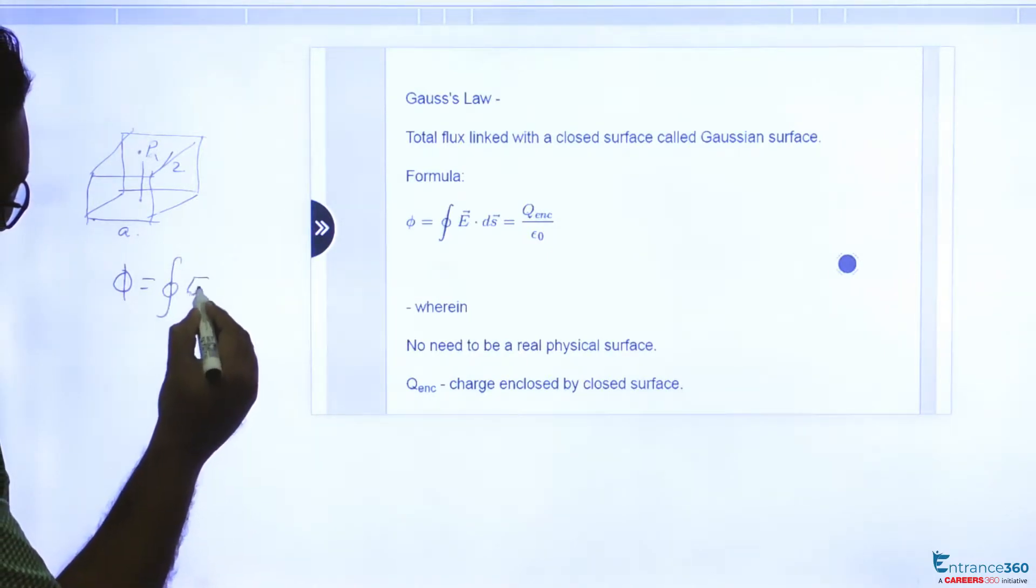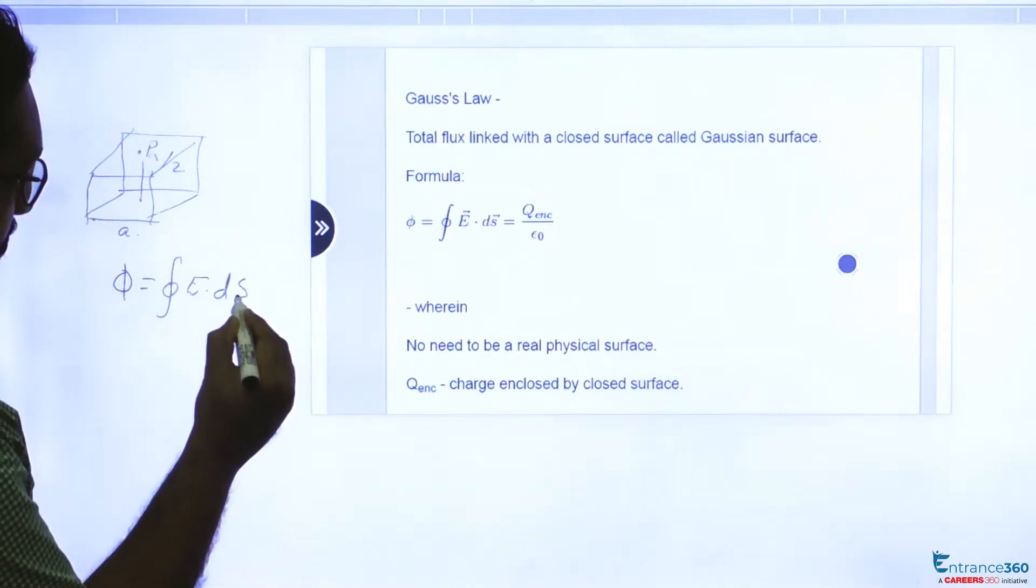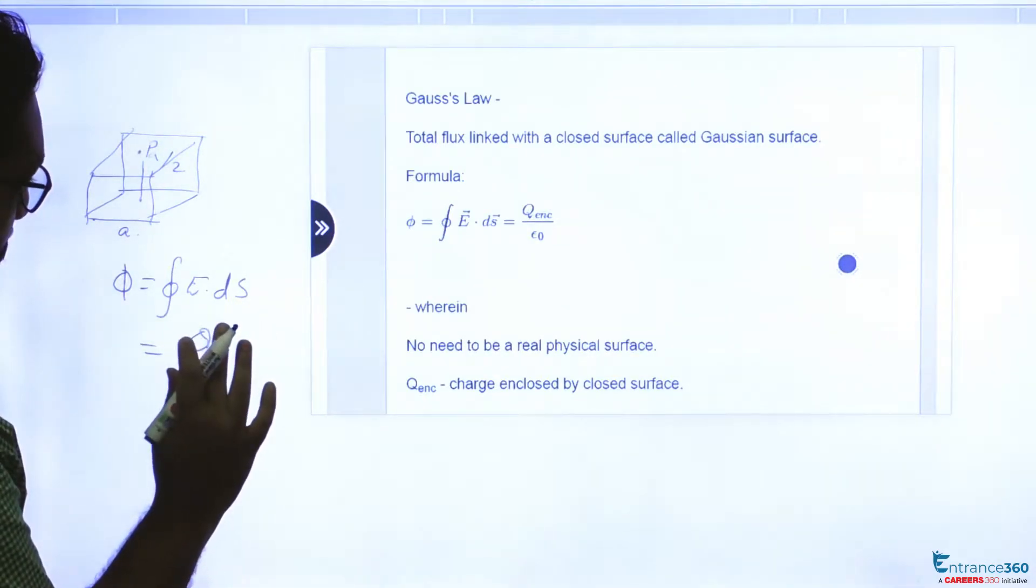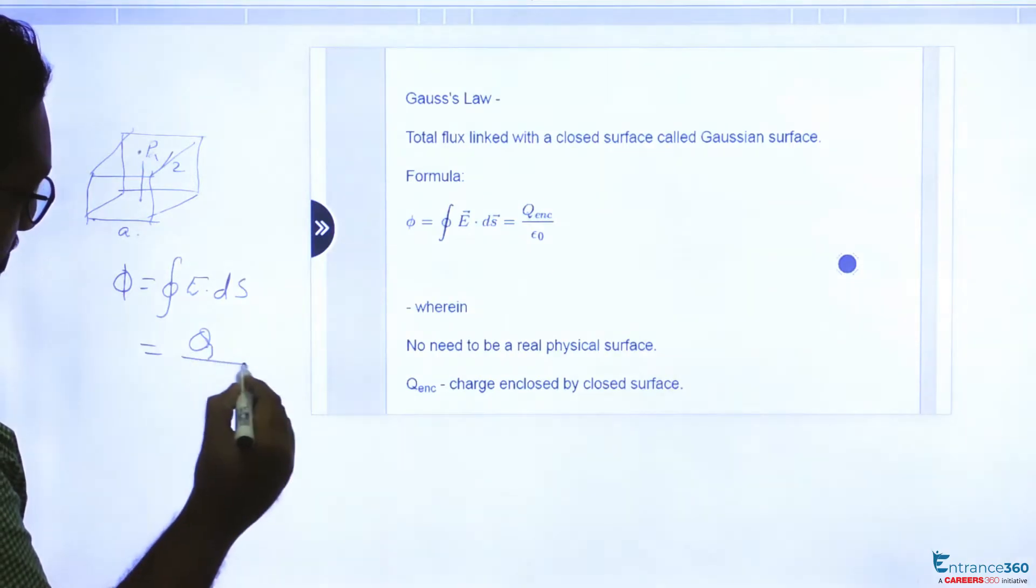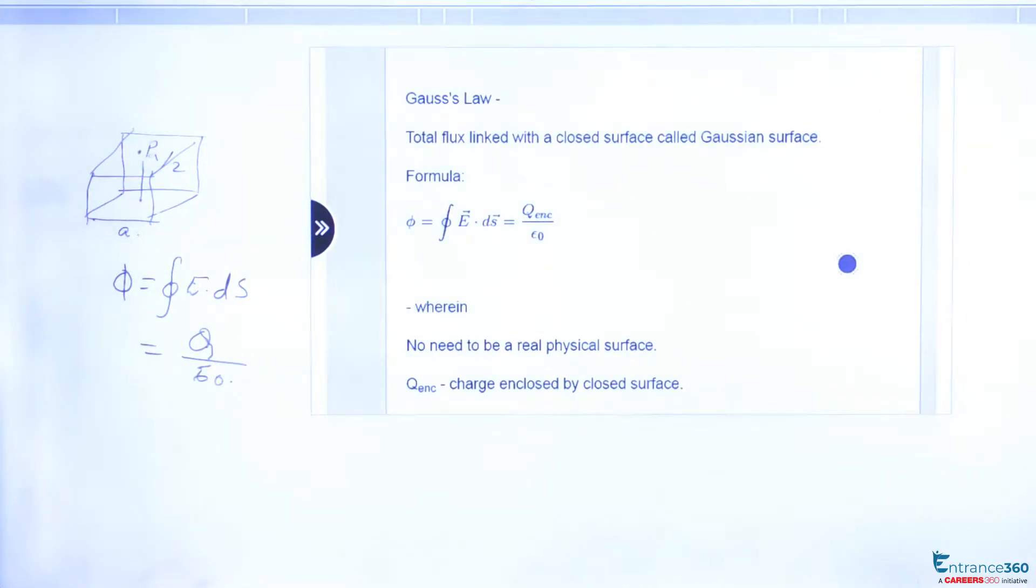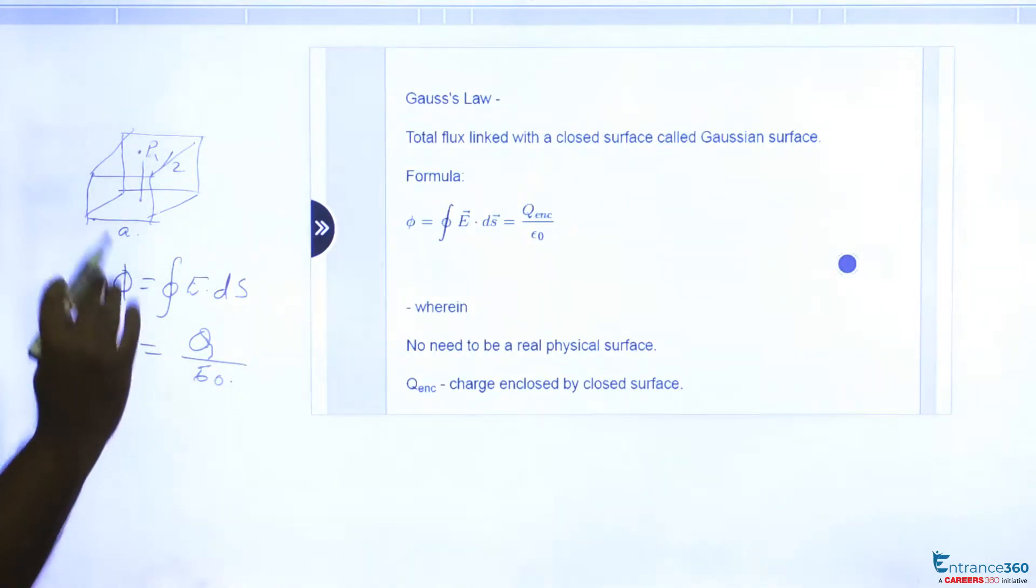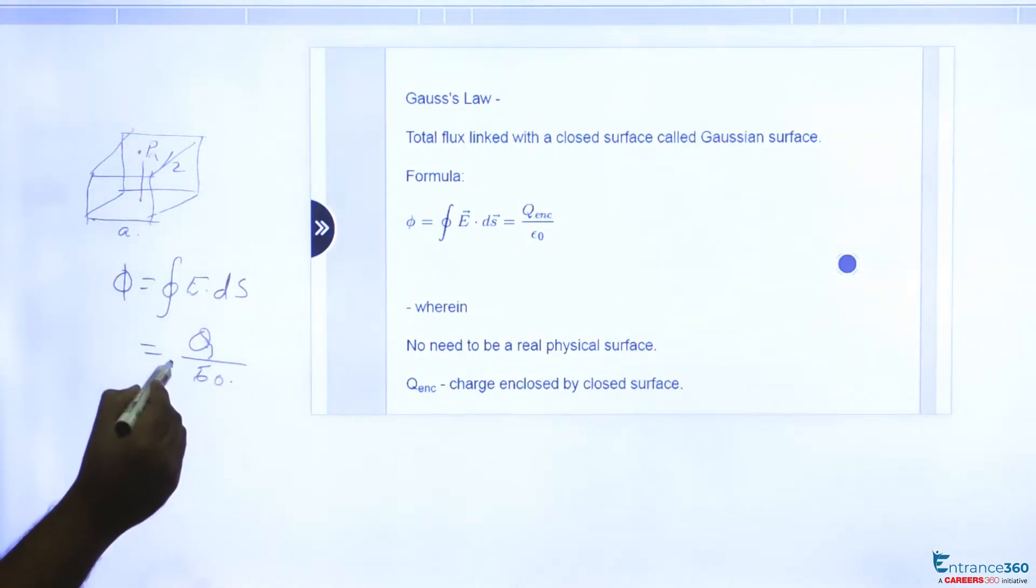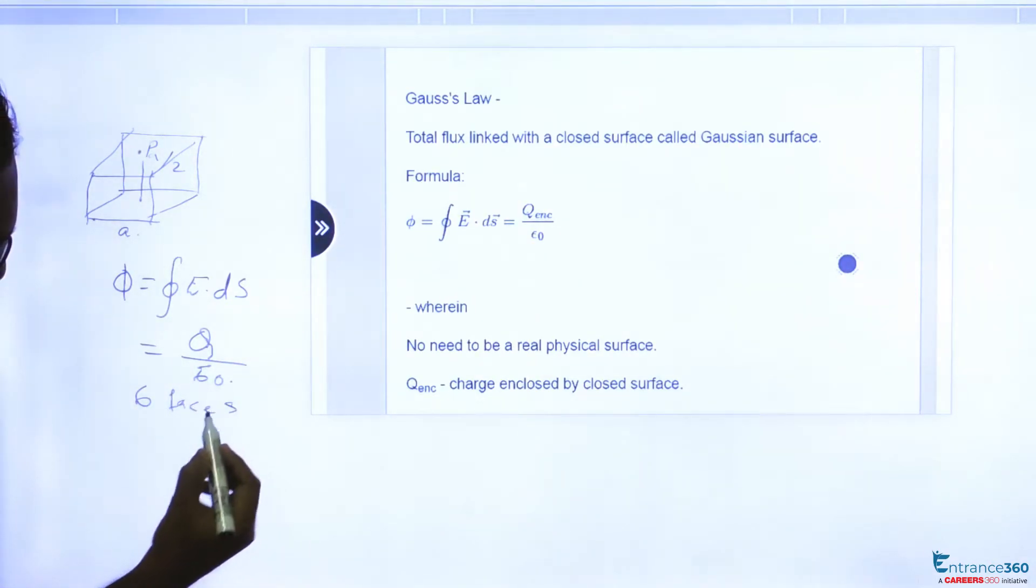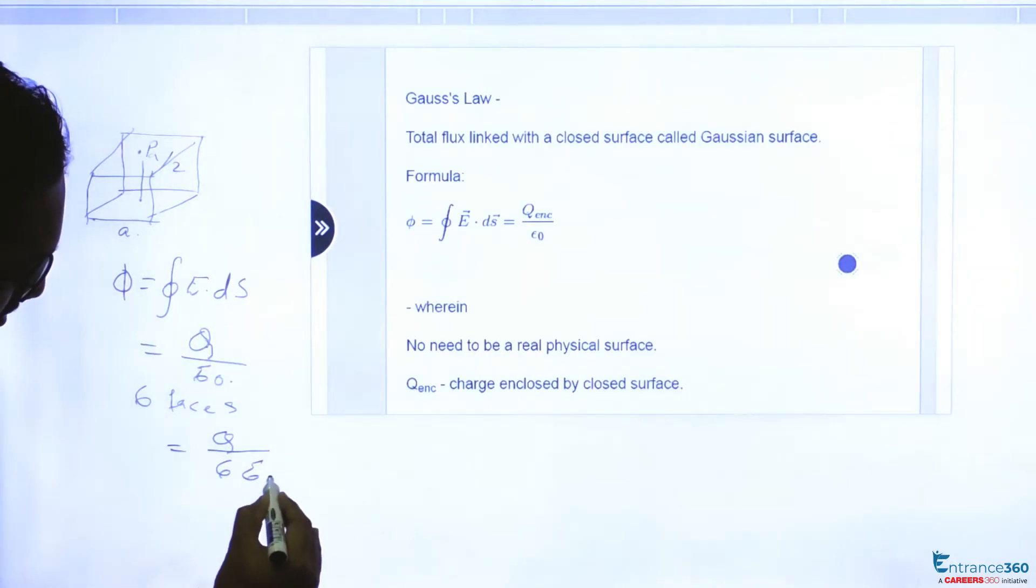is ∫E·dS which is equal to net charge enclosed divided by ε₀. So this is the total electric flux. Since we have six faces, electric flux through a single face will be q/(6ε₀).